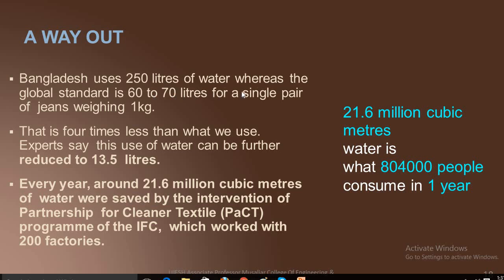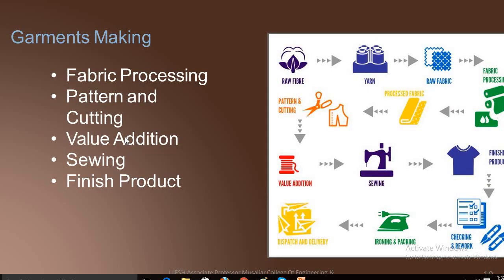Bangladesh uses 250 liters of water for a single pair of jeans weighing one kg, whereas the global standard is 60 to 70 liters — that is four times more than the standard. Experts say this use of water can be further reduced to 13.5 liters. Every year, around 21.6 million cubic meters of water were saved by the intervention of the Partnership for Cleaner Textile program of IFC, which worked with 200 factories.